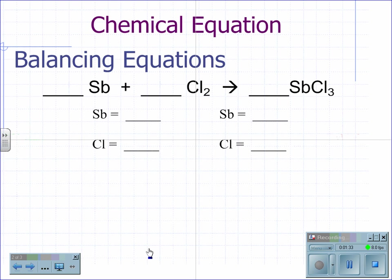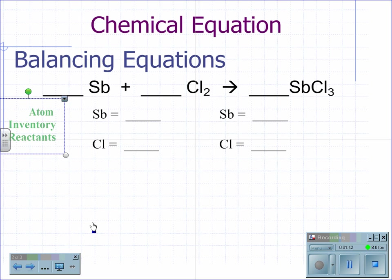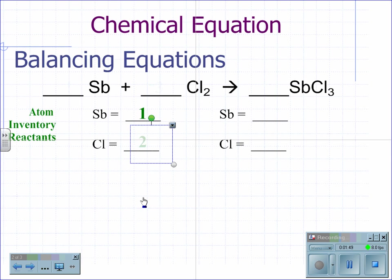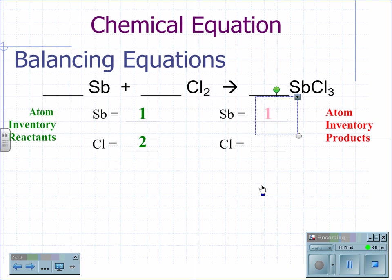When antimony combines with chlorine to make antimony chloride — Sb plus Cl₂ yields SbCl₃ — we again start by creating an atom inventory of the reactants. Antimony has one atom and chlorine has two atoms. On the product side, antimony has one atom and chlorine has three atoms.